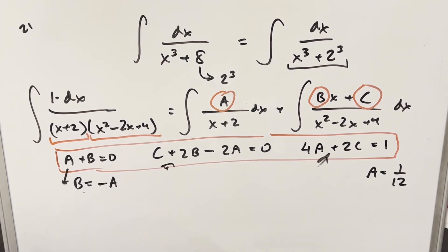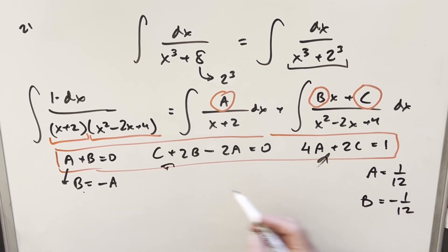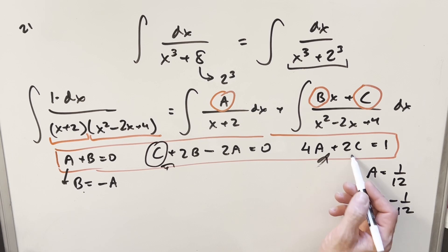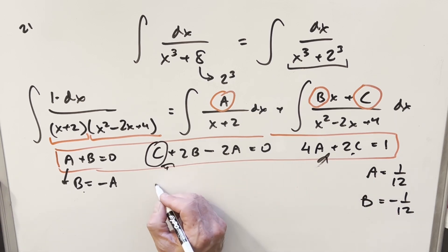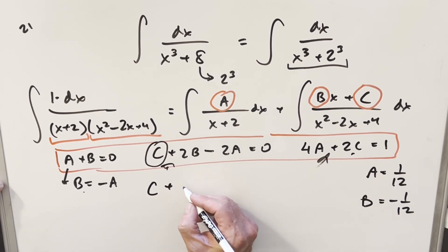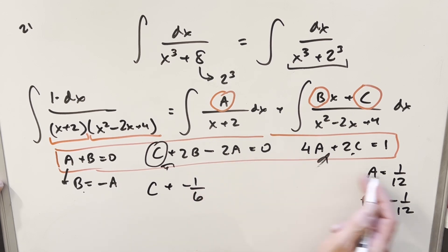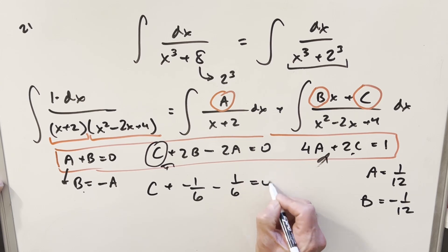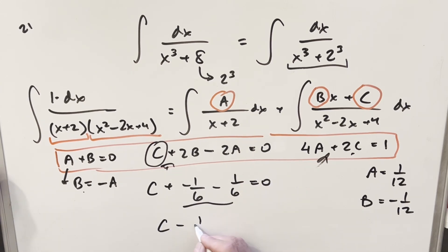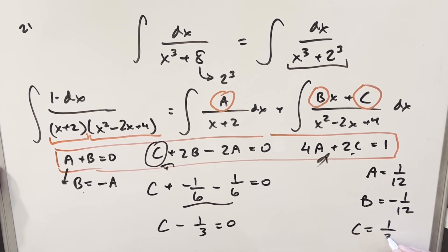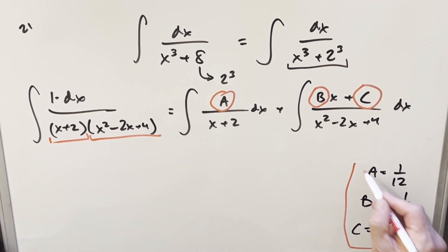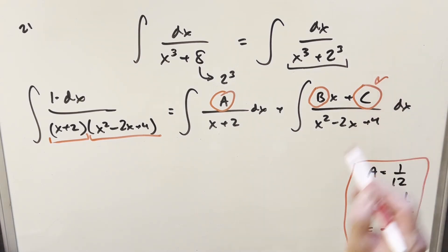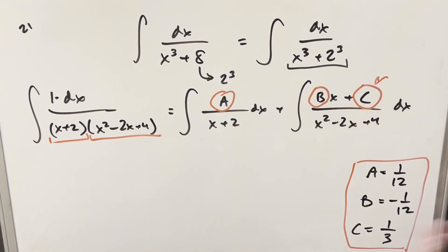With a equals 1 over 12 established, b equals minus a so b equals minus 1 over 12. To find c, using c plus 2b minus 2a equals 0: c plus 2 times minus 1/12 minus 2 times 1/12 equals c minus 1/6 minus 1/6 equals 0, giving c minus 1/3 equals 0, so c equals 1/3. Now we have all values and can go back to our integral.